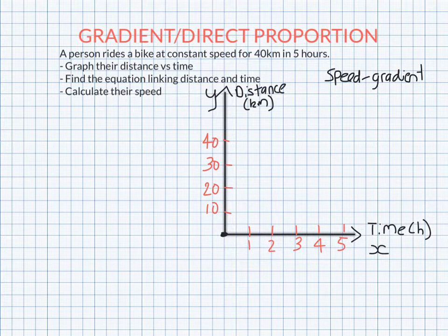So because the speed is constant, the gradient will be constant. And constant gradient means straight line. So that makes our job really easy.